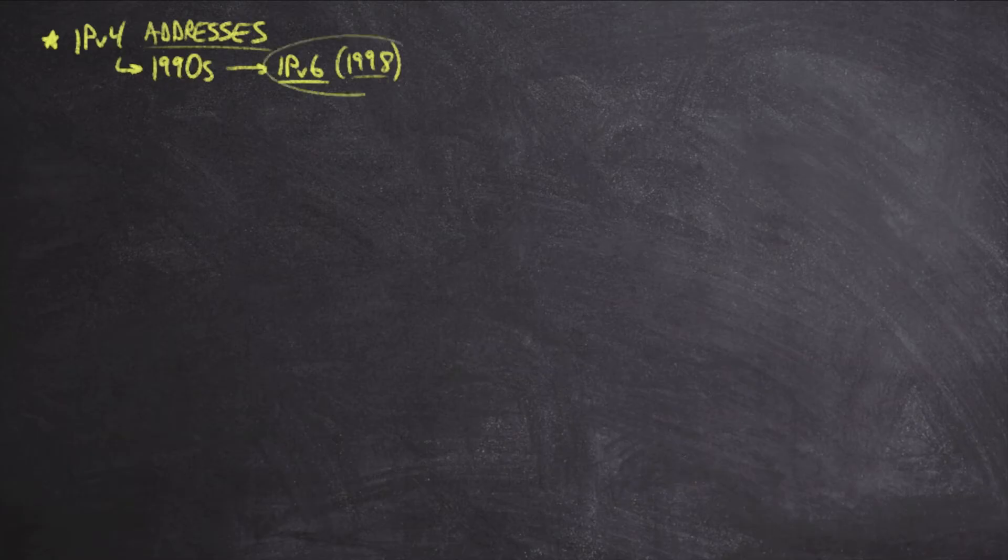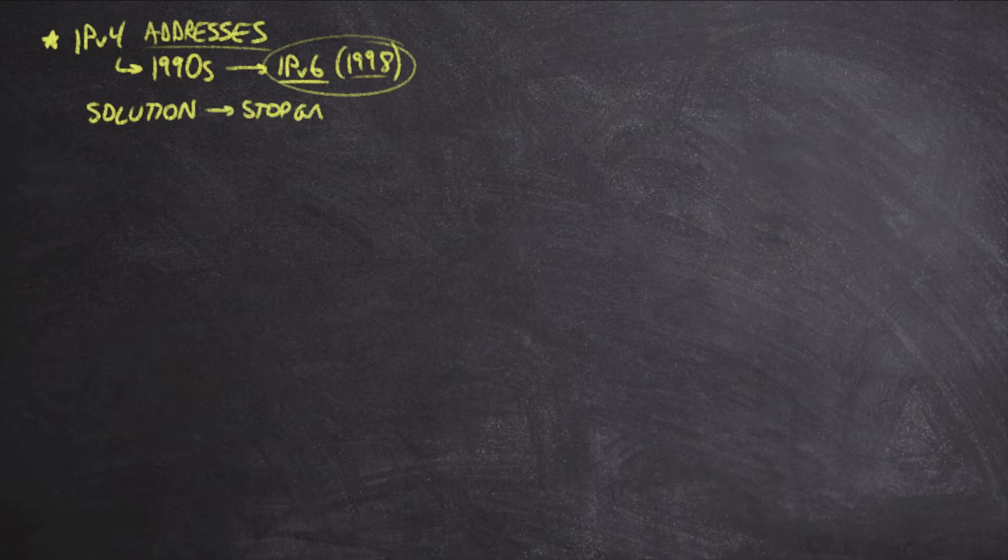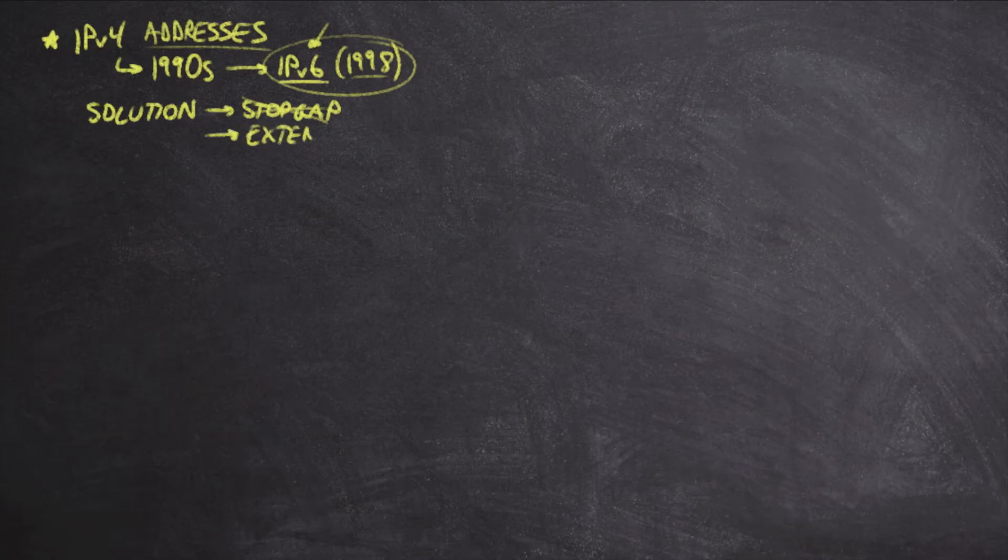Well, the reality is that by the time IP version 6 came out, we had another solution. And this solution, which was originally meant as a stopgap, meaning that it was just supposed to help us last until IP version 6 came out, it ended up not just being a stopgap.